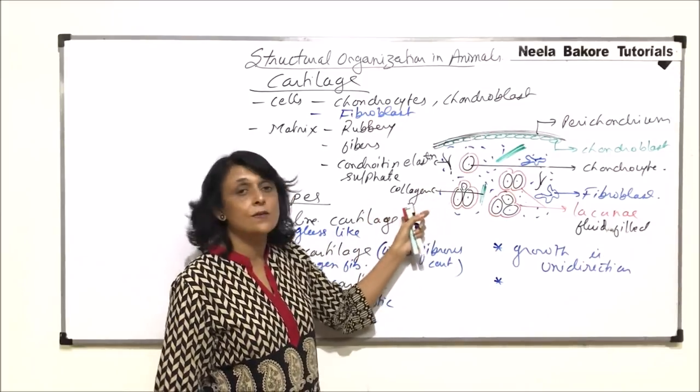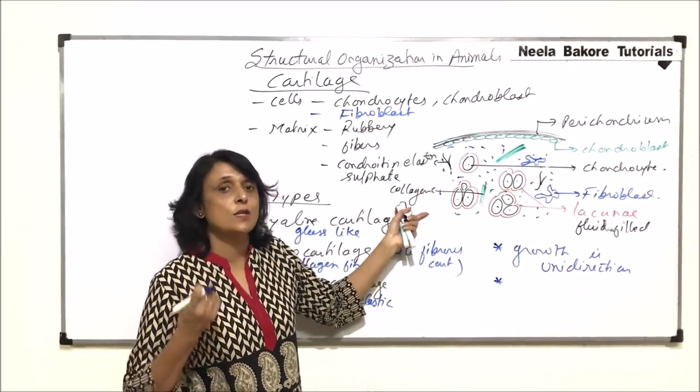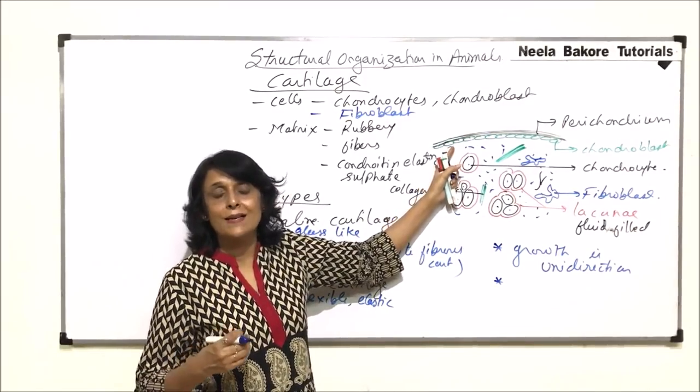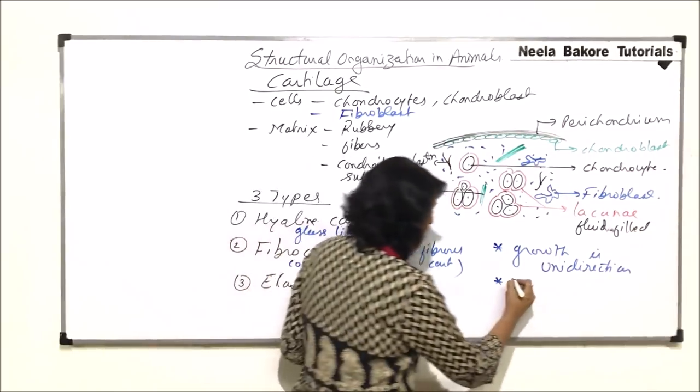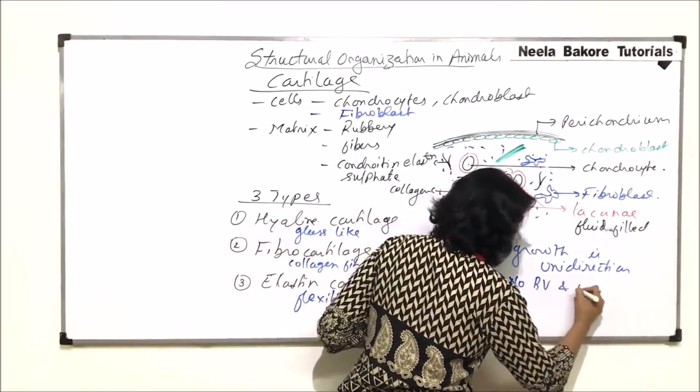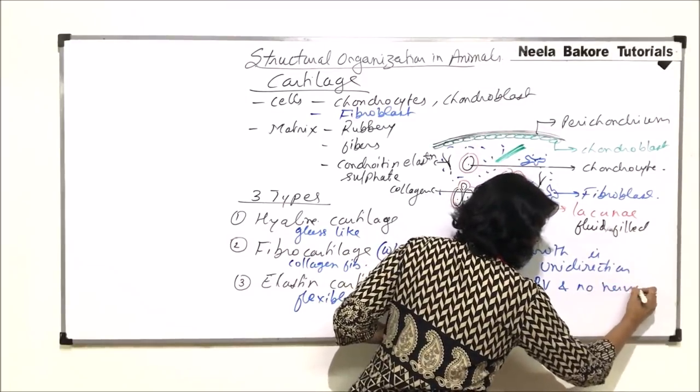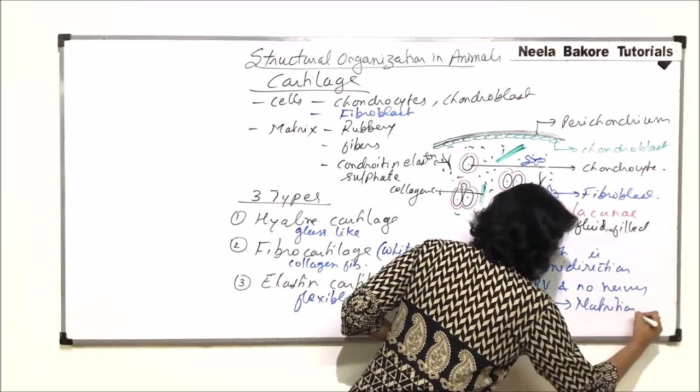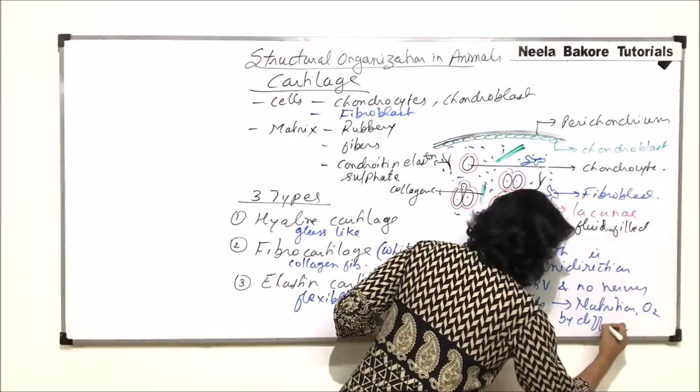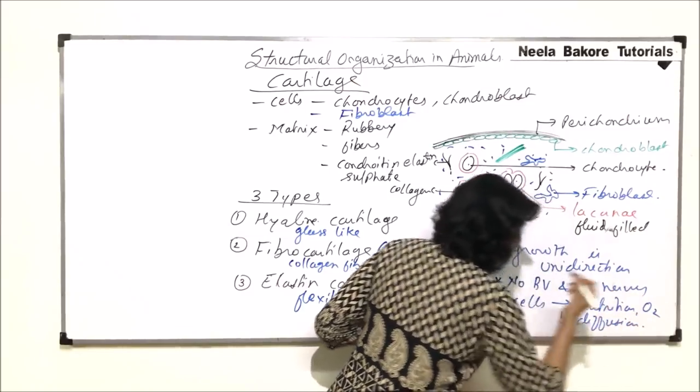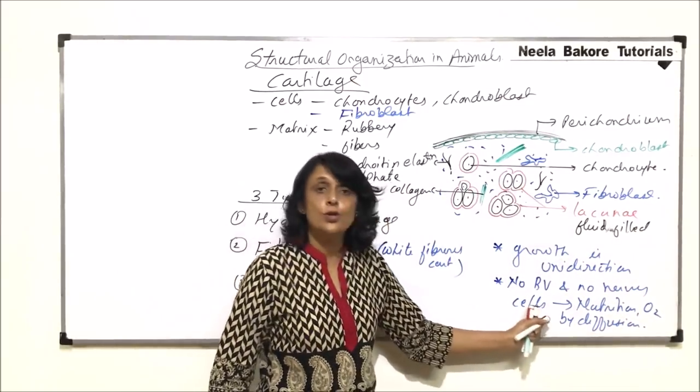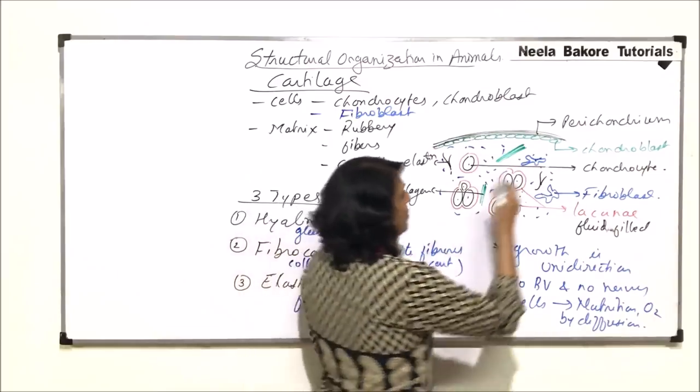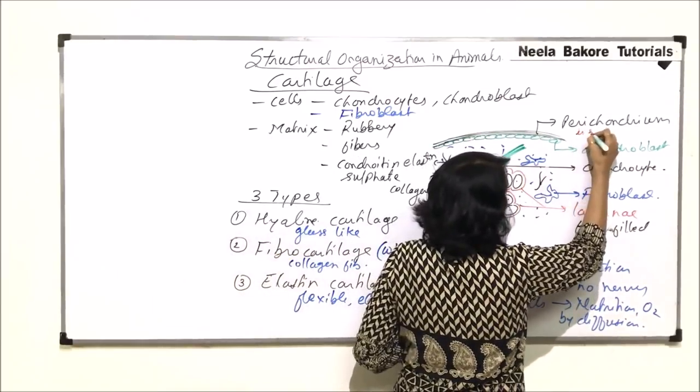Then how do these cells receive the nourishment or gases for respiration? Nourishment and respiratory gases diffuse up to the cells. So there is no blood vessel and no nerves. Cells receive nutrition and oxygen by diffusion.